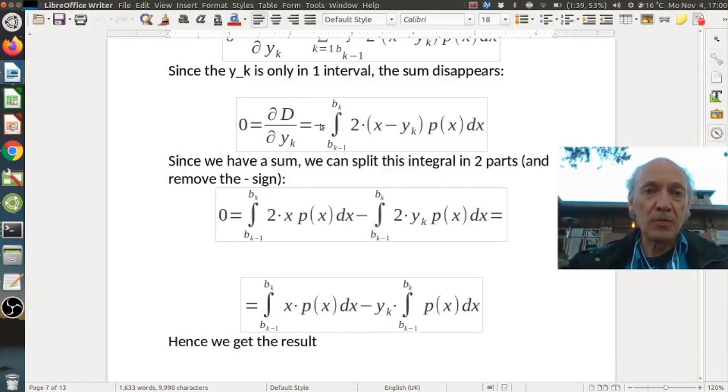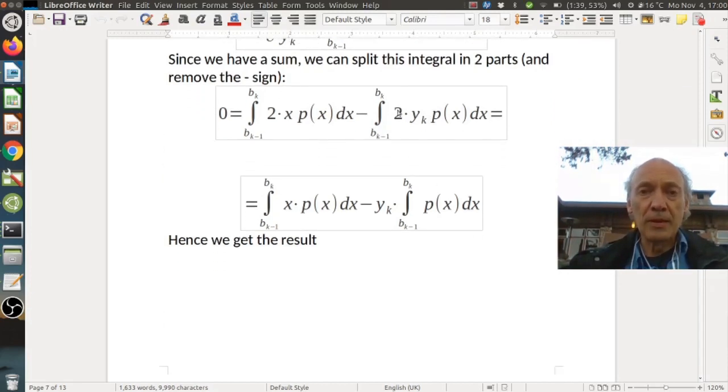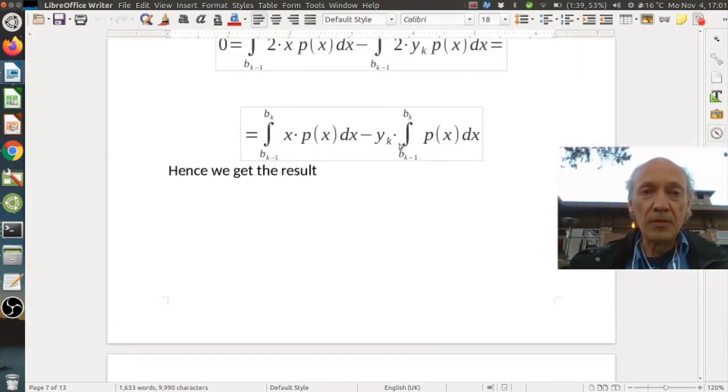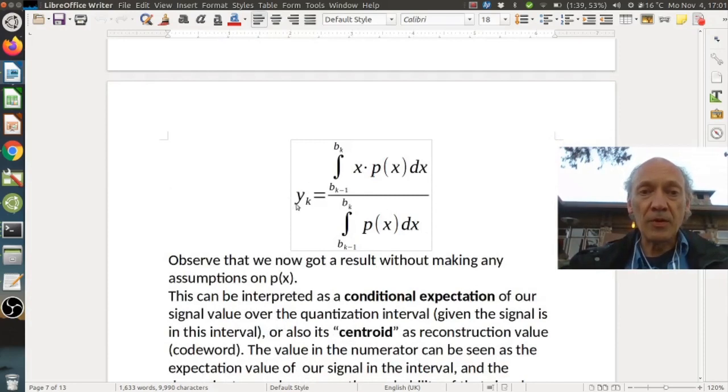We just have those two terms, the x and the minus y_k. We can also cancel the two in both sides and we get the result that this needs to be equal to this. We can bring the y_k on the other side, divide by this integral, and this is our result. y_k is this integral over x times the probability density function divided by the integral over the probability density function itself.